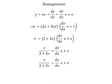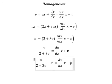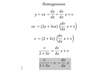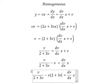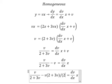So we put v equal to the left. We multiply by 2 plus 3v on numerator and denominator.